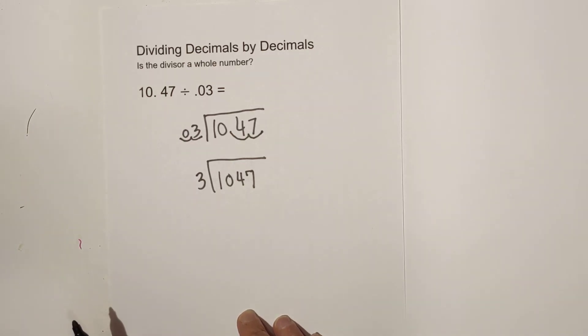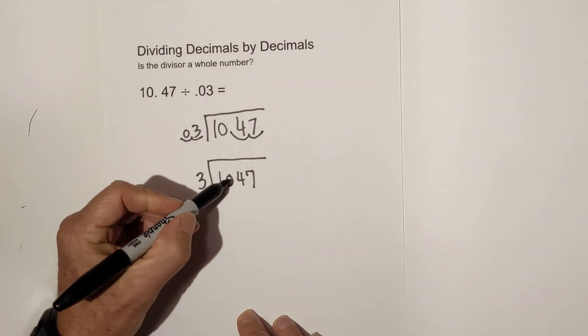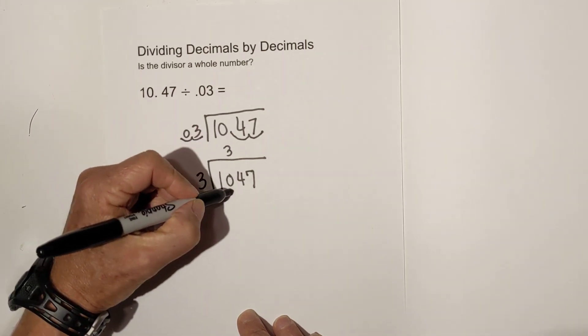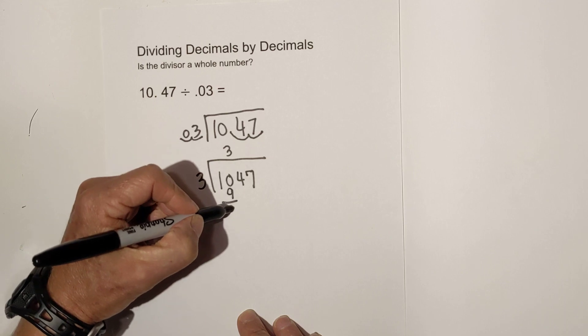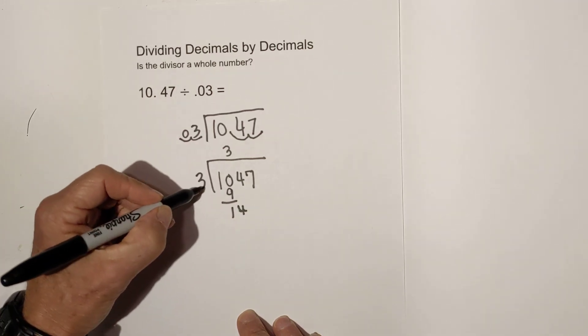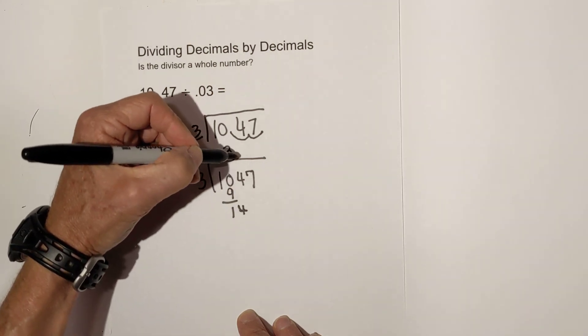And now all we do is some long division. 3 goes into 10 three times. 3 times 3 is 9. Subtract, bring down the 4. 3 goes into 14 four times.